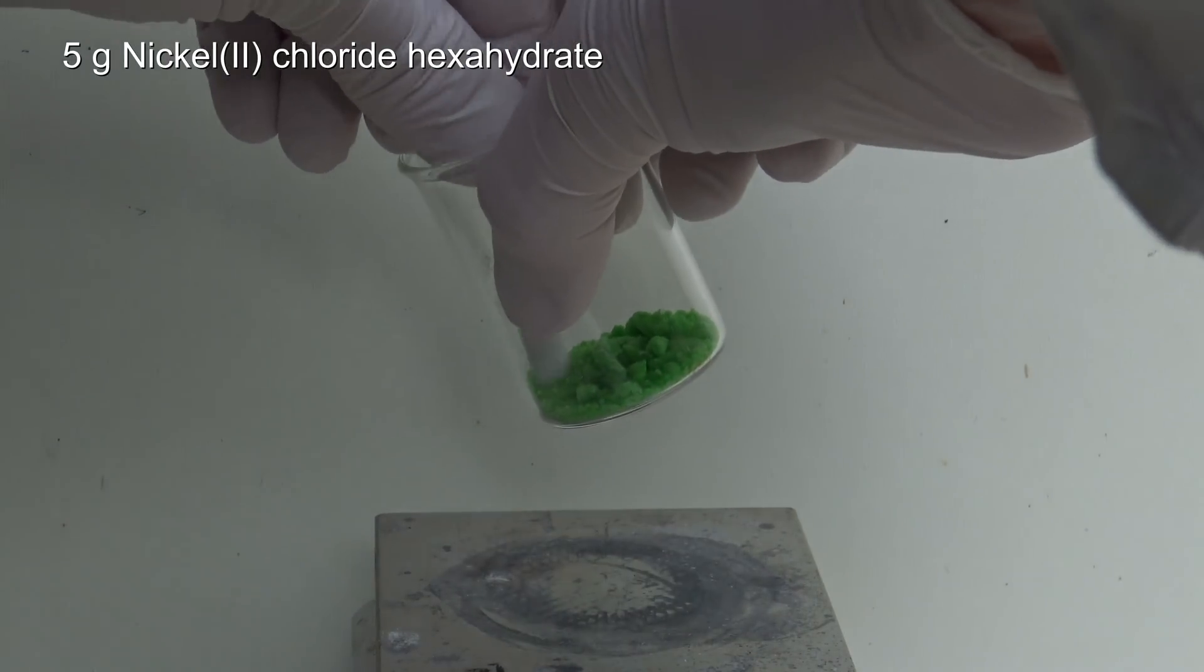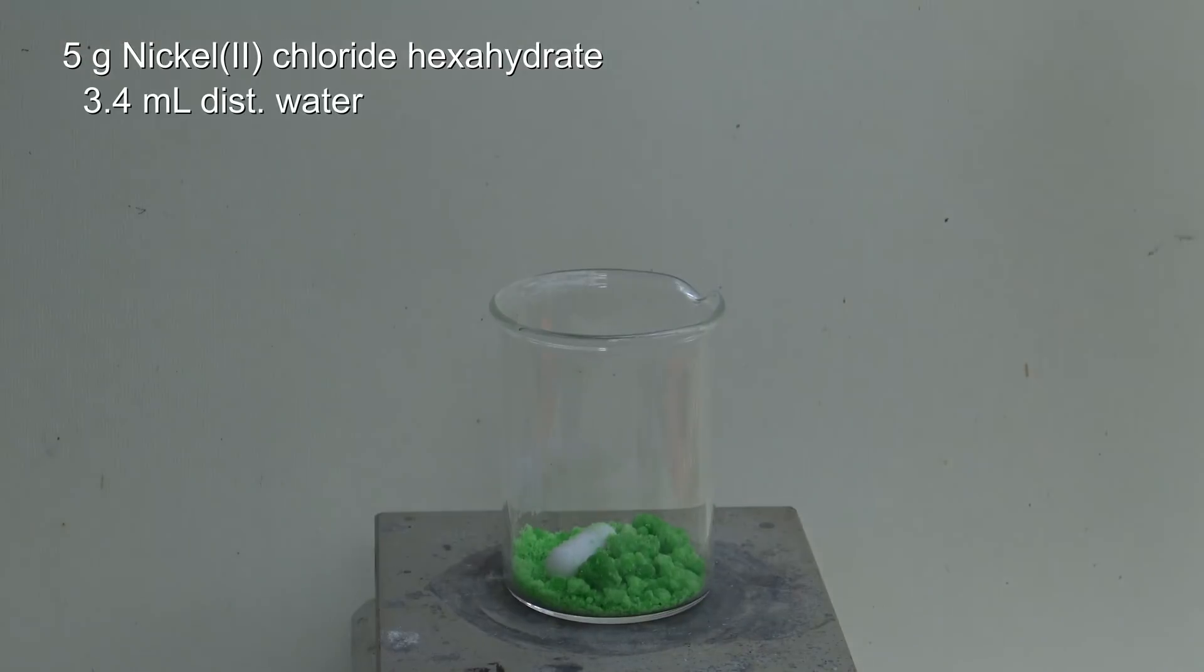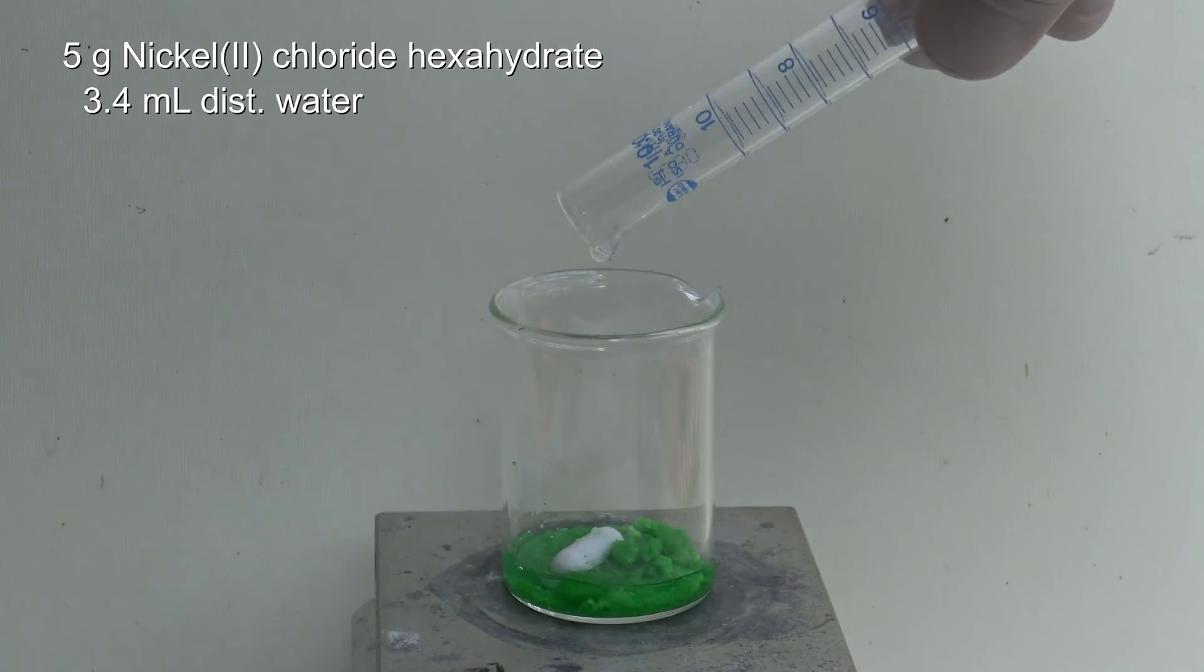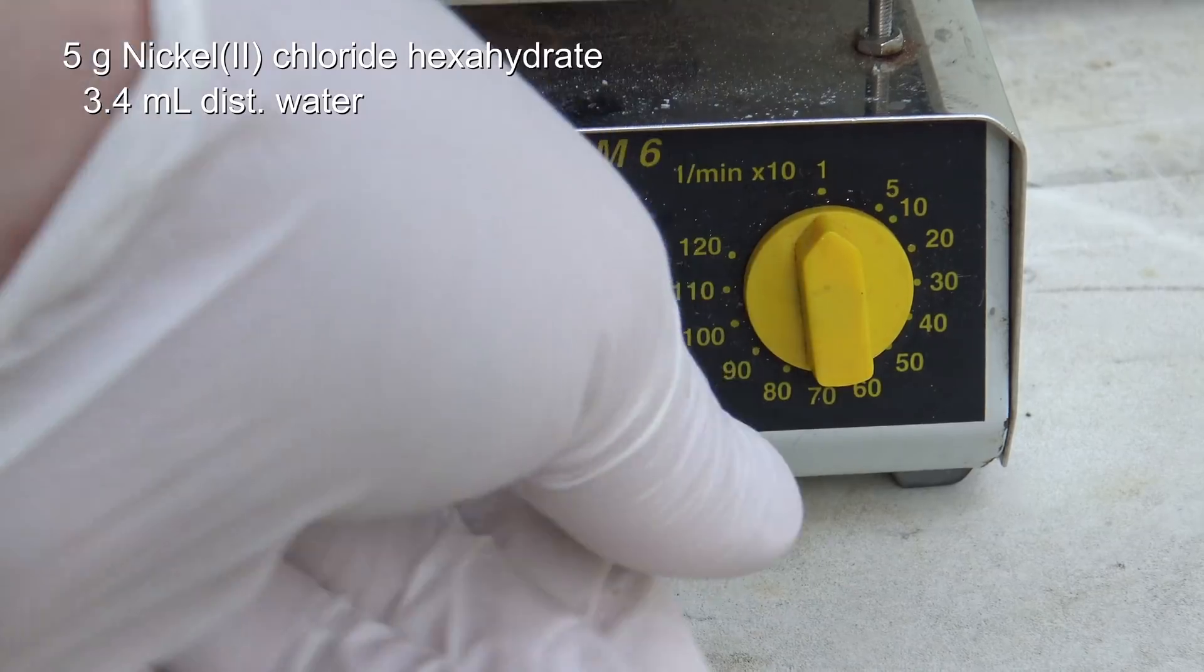Then, 5 grams of nickel chloride hexahydrate were dissolved in 3.4 milliliters of distilled water. This took about 15 minutes even though the mixture was stirred.